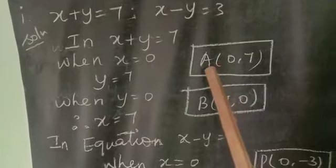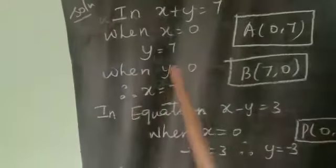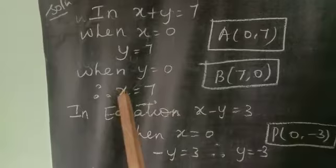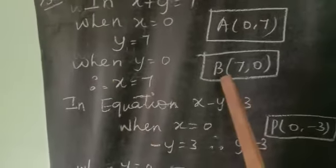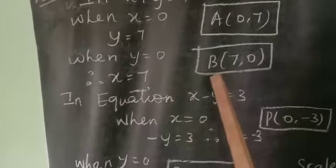So we mention A point 0,7. When y is equal to 0, then we get x is equal to 7. So 7,0 is a B point.